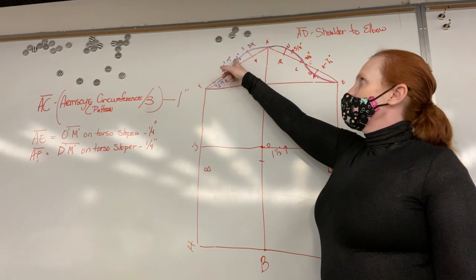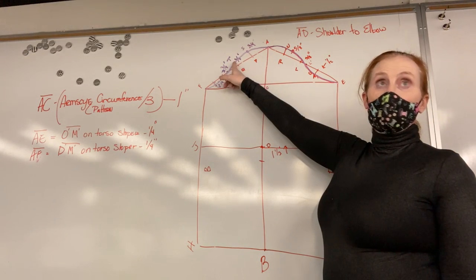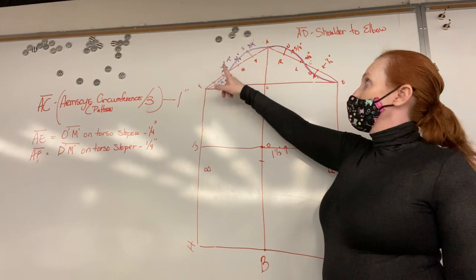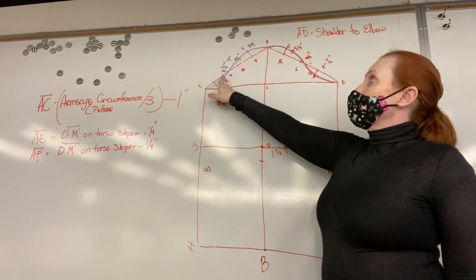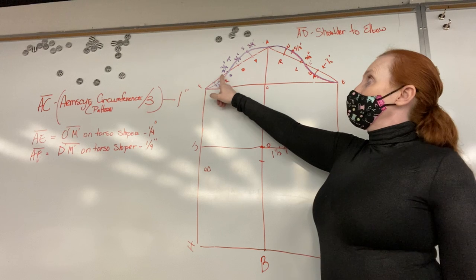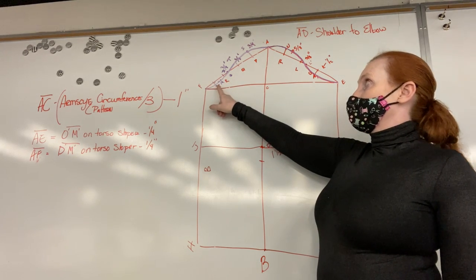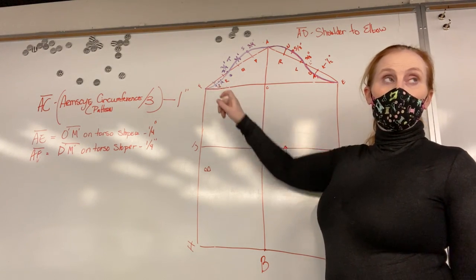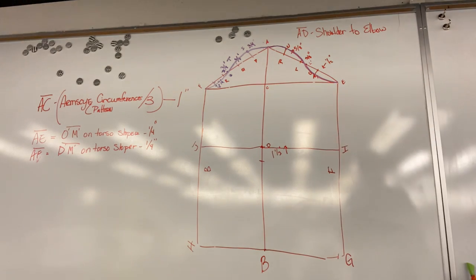Okay, S, T is 3 eighths of an inch out from Q. R is 3 eighths of an inch along the line up from R, and then find the midpoint between R and F, and drop a quarter of an inch down into the sleeve from B. This is on page 28.